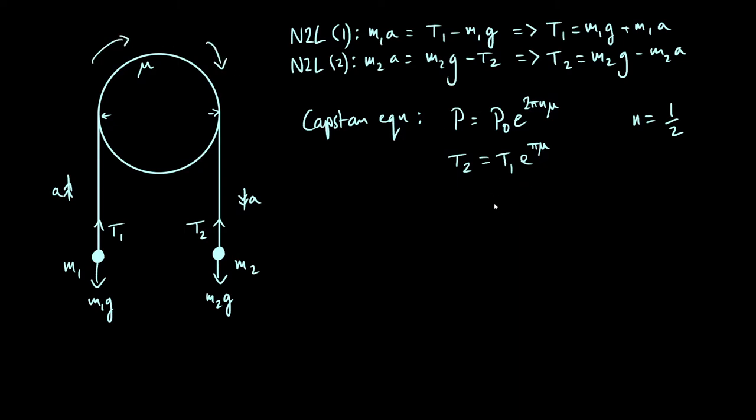So now we're done with the physics of this, we've just got to solve our system of equations. So what we can do is take this definition here and plug in these two expressions for t1 and t2 if we want to find the acceleration. So t2, remember that was m2g minus m2a, that has to be equal to e to the pi mu times t1, which was, in fact let's expand this whole thing. So e to the pi mu times m1g plus e to the pi mu times m1a.